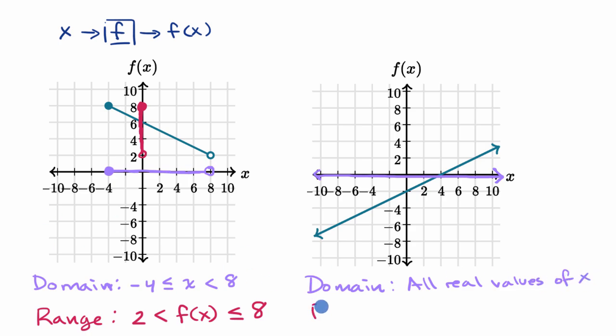And now you could imagine what the range might be, because this line is going to keep increasing and increasing forever. So you can have an arbitrarily high f of x. And similarly, this line is going to keep decreasing and decreasing forever as we go to the left. And so you could have an arbitrarily low value of f of x. So the range here is all real values of f of x. And we are done.